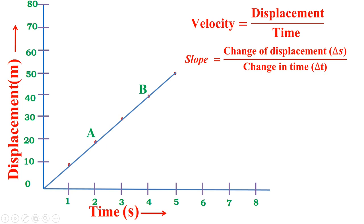After selecting these two points, if we draw a dotted straight line towards the displacement y-axis, it represents that A is at the position of 20 meters and B is at the position of 40 meters. The displacement of B is 40 meters and the displacement of A is 20 meters. Now we plot a right-angle triangle like this.